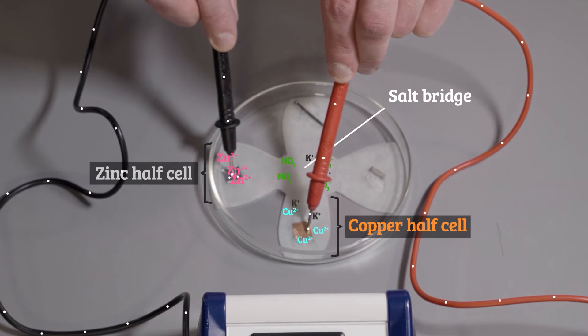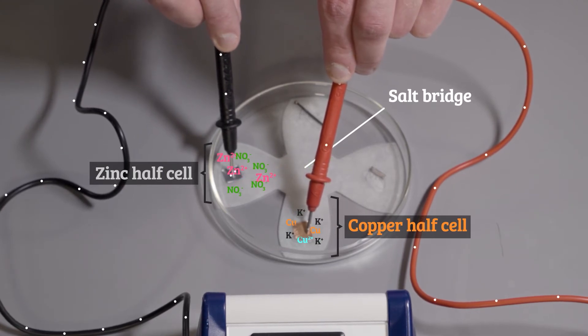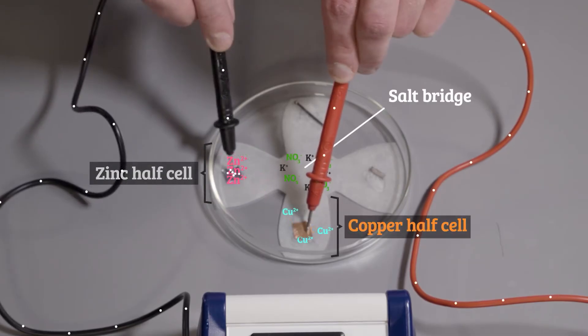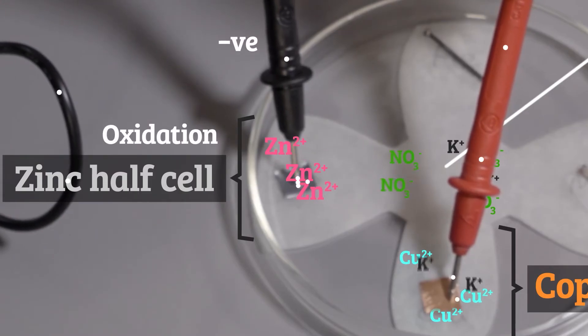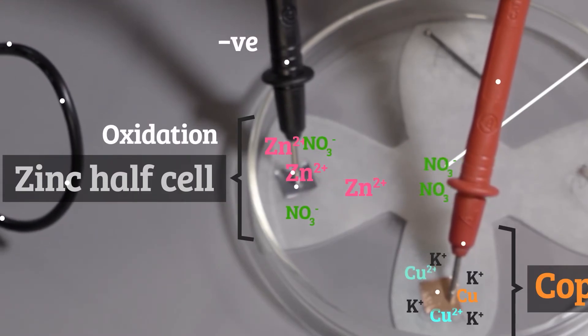The same thing is happening here as with the cell I showed you in the introduction, just on a smaller scale. Notice the direction of electron flow. Electrons will leave the negative electrode. Here the zinc atoms are becoming ions. They are being oxidized.